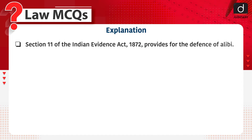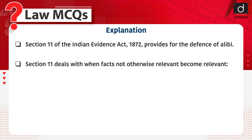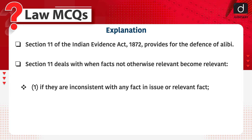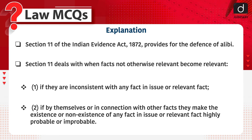Section 11 of the Indian Evidence Act 1872 provides for the defense of alibi. Section 11 deals with when facts not otherwise relevant become relevant — if they are inconsistent with any fact in issue or relevant fact, or if by themselves or in connection with other facts, they make the existence or non-existence of any fact in issue or relevant fact highly probable or improbable.